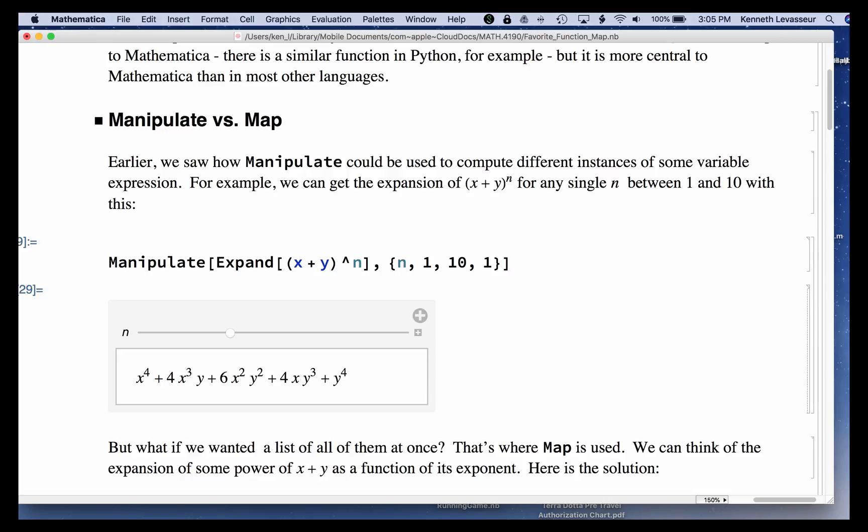So that's one situation where you want to quickly see one value of an expression. But what if you want to see all of them at once?